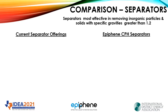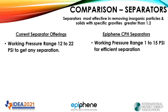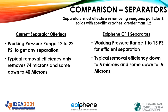So let's look at the comparison between separator technologies. Most effective in removing inorganic materials with solids that have specific gravities greater than 1.2, and in reality most of the separator companies start at 1.8 specific gravity. The working pressure range in terms of pressure loss is 12 to 20 psi to get any separation, whereas our working pressure range loss is 1 to 15 psi and we still get efficient separation. Typical removal efficiency is 74 microns and some down to 40 microns. Anything below 40 microns, you need really small separators to make that happen, and typically that's not done in the industry.